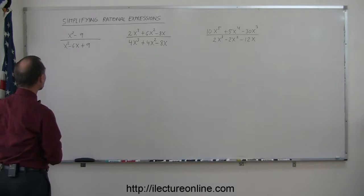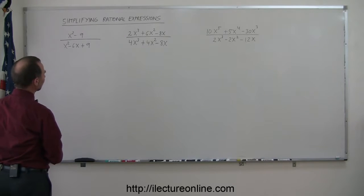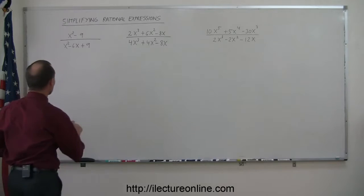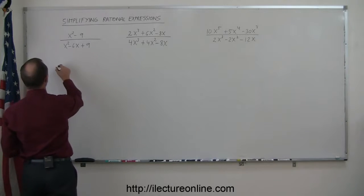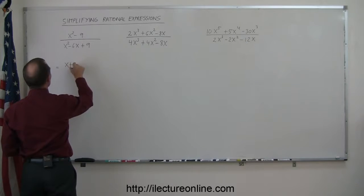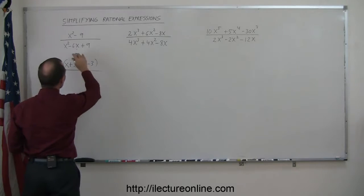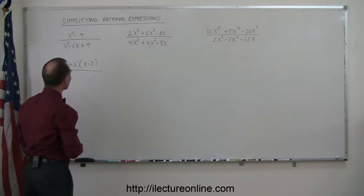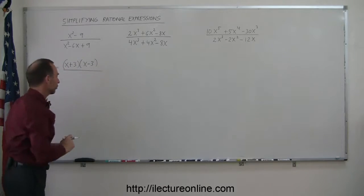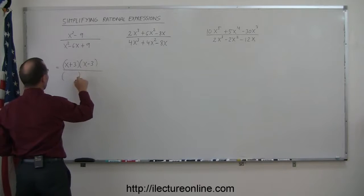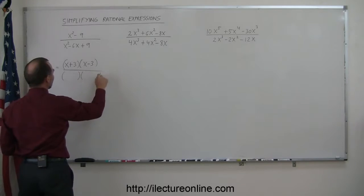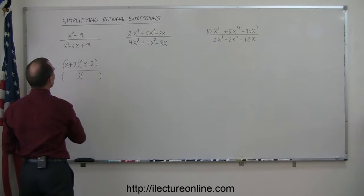Looking at our first example, we look at the numerator, and that looks like the difference of squares, so I know how to factor that. I can write that as an (x + 3) times an (x - 3). And when I look at the denominator, that looks also factorable, so I know I'm going to need a product of two binomials, so I'll write the parentheses.